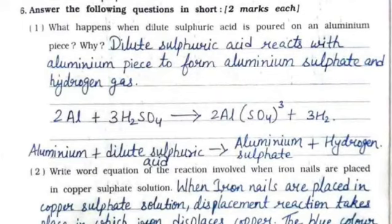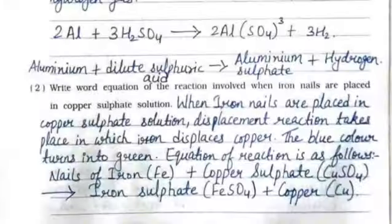Question 6: short answers. First: what happens when dilute sulfuric acid is poured on an aluminum piece? Dilute sulfuric acid reacts with aluminum to form aluminum sulfate and hydrogen gas. The equation is: aluminum + dilute sulfuric acid → aluminum sulfate + hydrogen.